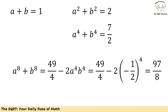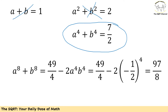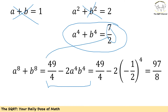Now let's find a to the power of 8 plus b to the power of 8. We use exactly the same approach, starting with a to the power of 4 plus b to the power of 4, squaring both sides and using the same identity. a to the power of 8 plus b to the power of 8 equals (7 over 2) squared minus 2 times a to the power of 4 times b to the power of 4. Replacing the value for ab, we end up with 97 over 8. That's our final answer.